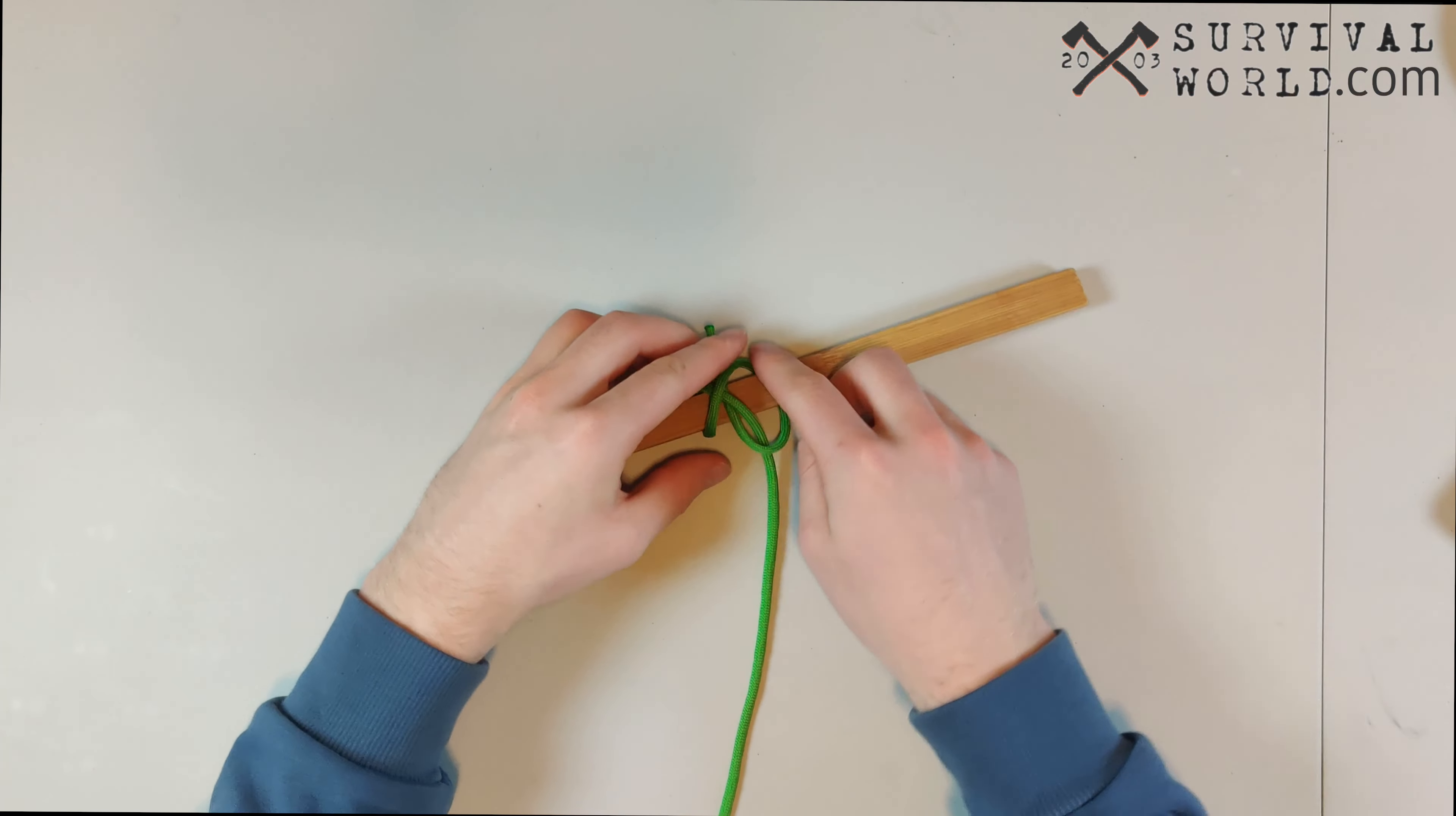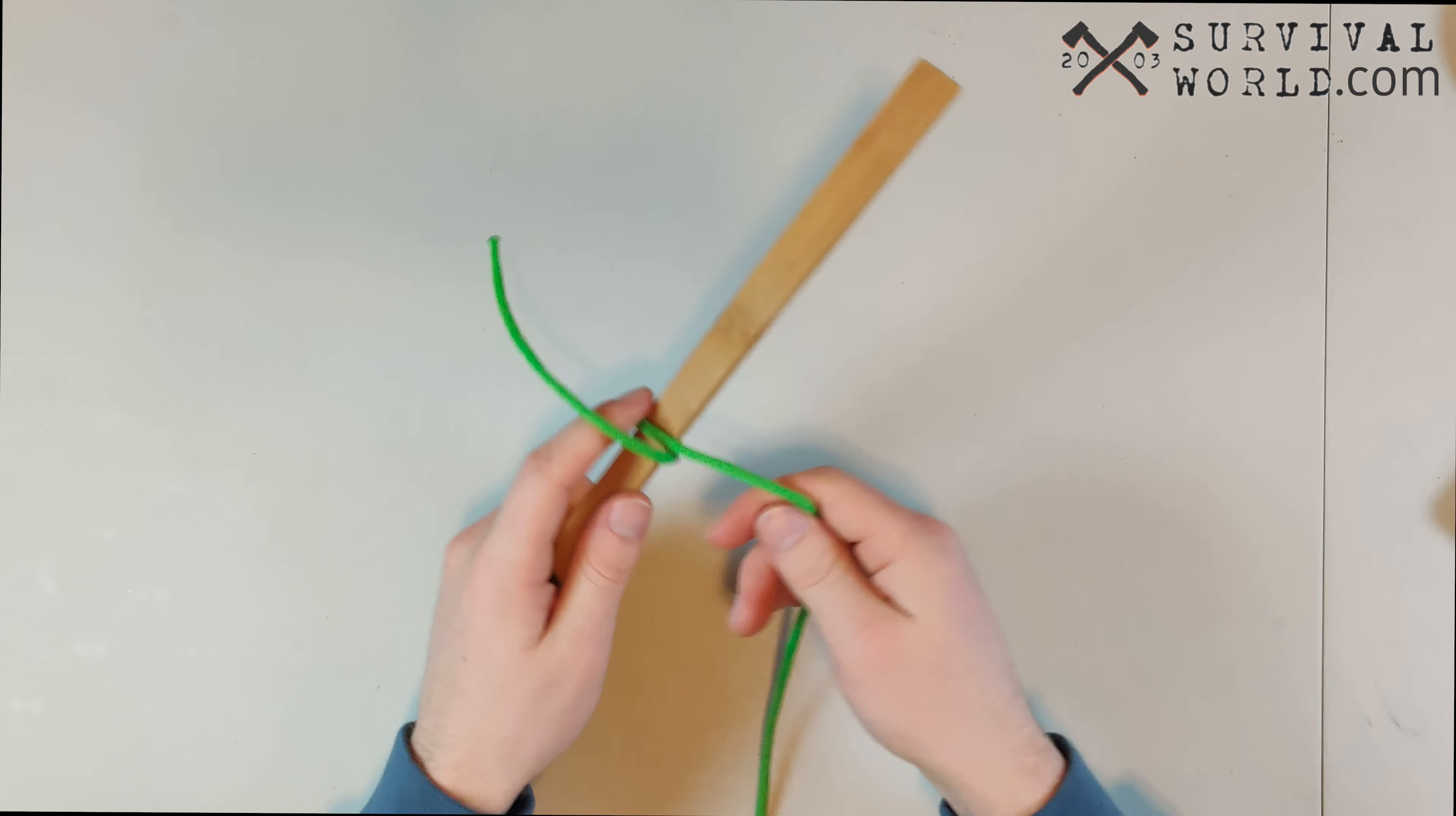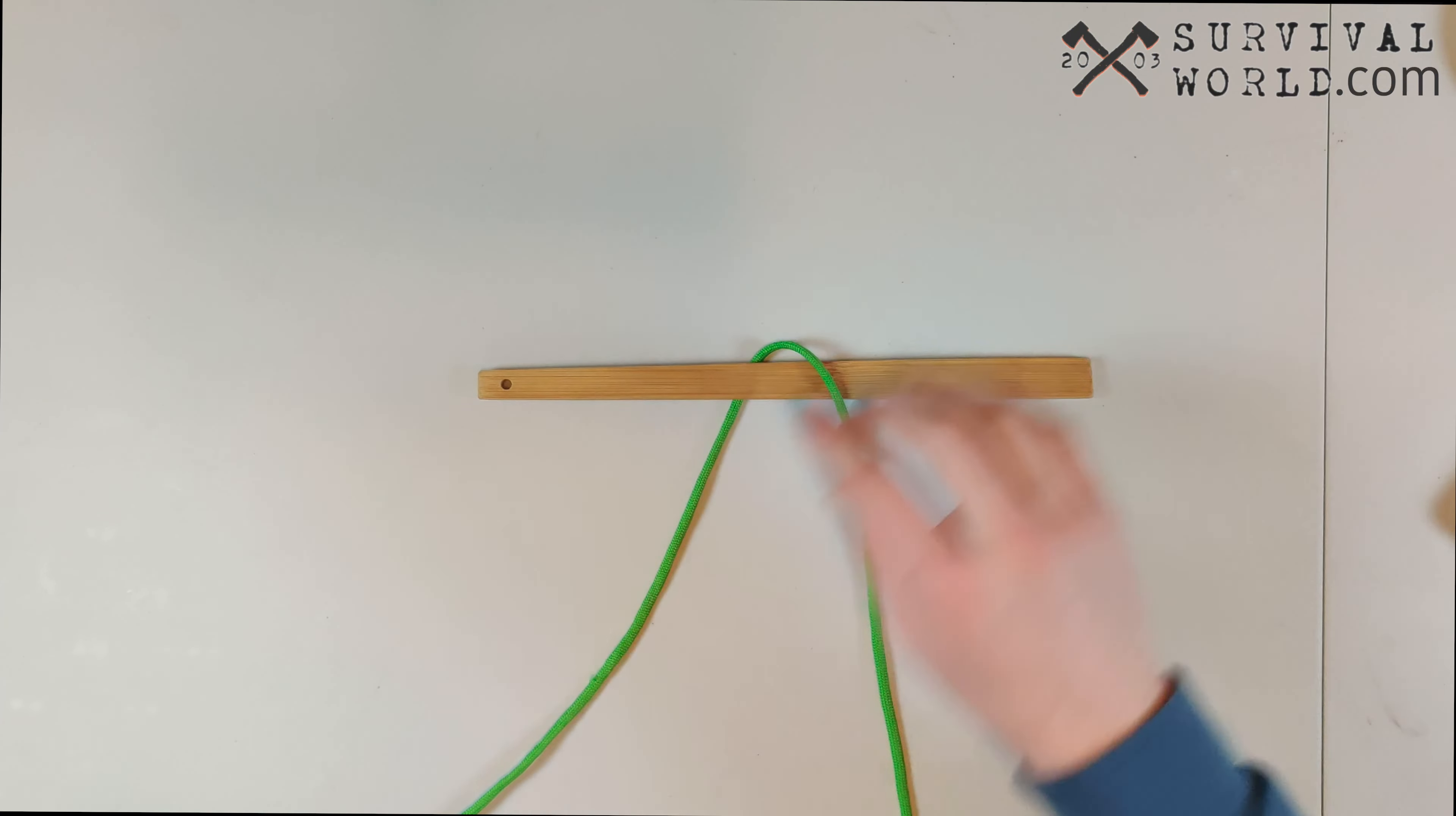Now we just want to cross it over to the left and we want to take our original wrap around and we're just going to lift it up a little bit, we're going to stick our end underneath that and have it go up. All we have to do to tighten this knot is grab our two ends and pull.